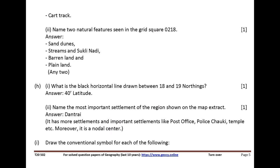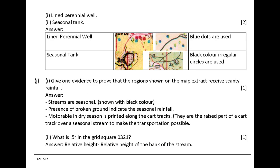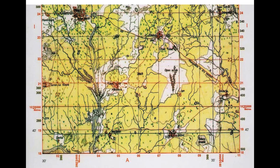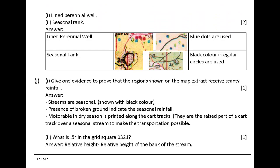Draw the conventional symbol for each of the following. Lined perennial well: used to show with blue dots. Seasonal tank: used to show with black colour irregular circles. Give one evidence to prove that the regions shown on the map extract receive scanty rainfall. Answer: streams are seasonal, shown with black colour. Presence of broken ground indicates seasonal rainfall. Motorable and dry season is printed along the cart tracks.